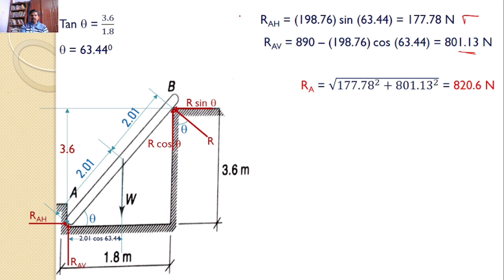Since I know the values of RAH and RAV, I can find RA: square root of RAH squared plus RAV squared, which is 820.6 Newtons. Hence, the answers are R equals 198.76 Newtons and RA equals 820.6 Newtons.